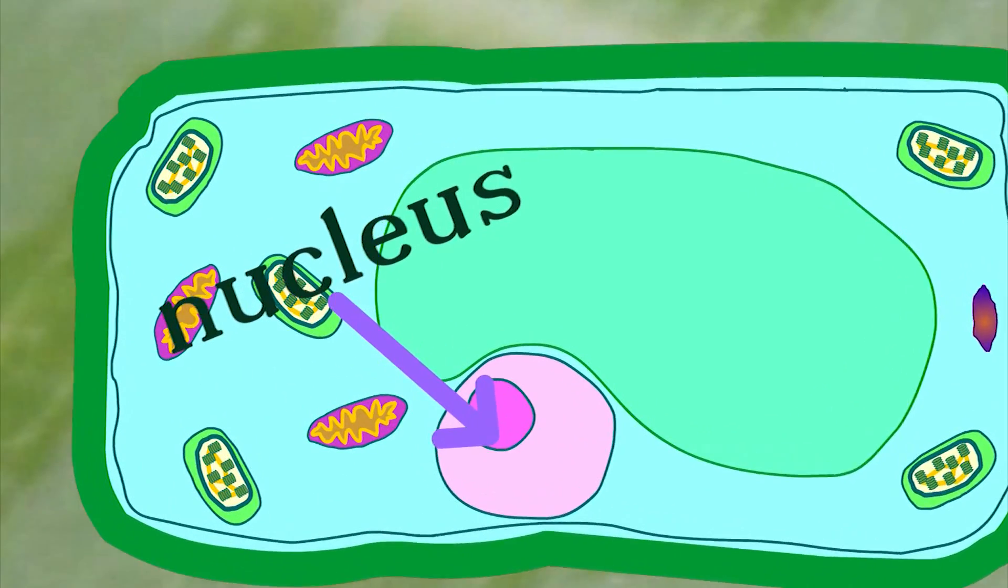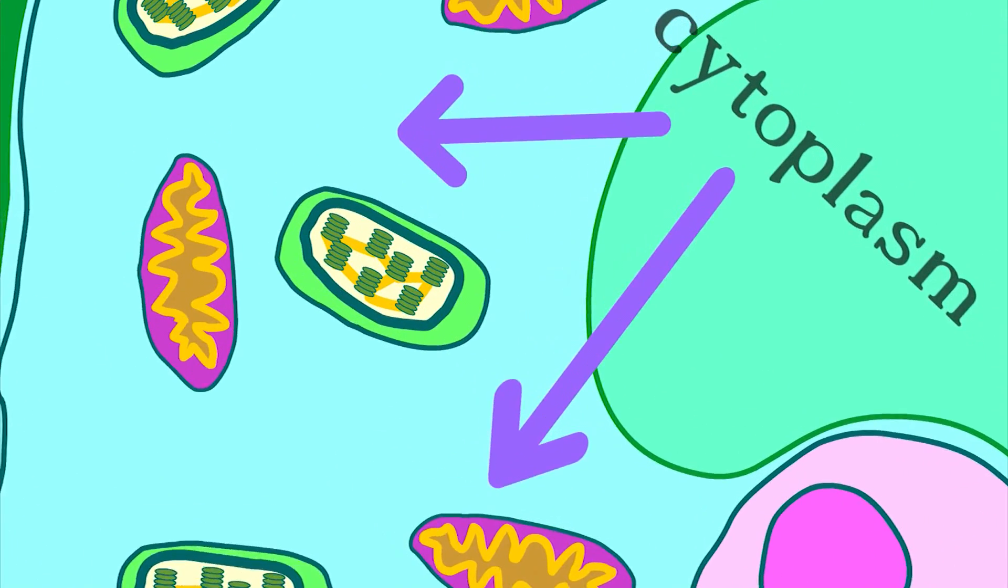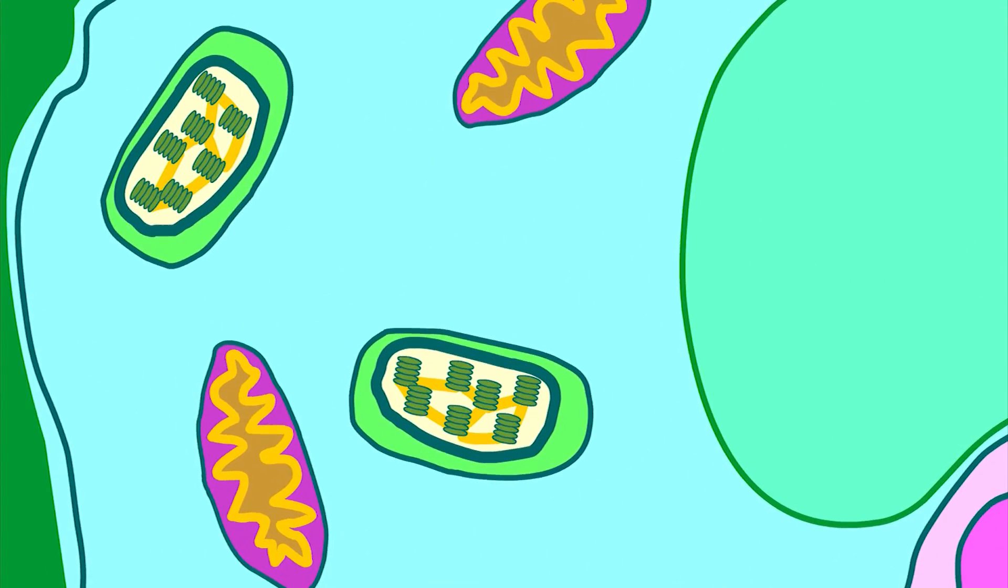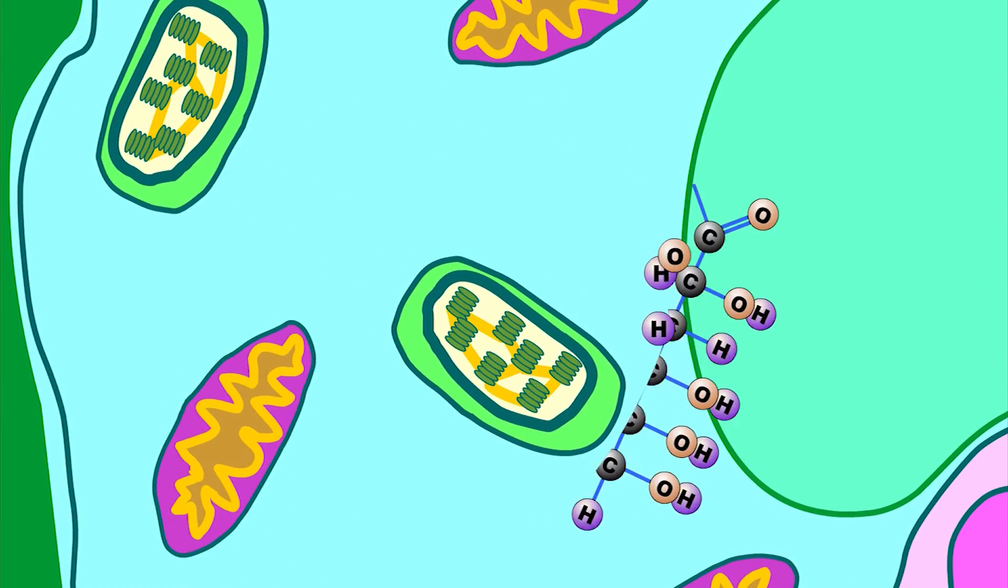The nucleus controls the activity of the cell and contains the DNA, while the cytoplasm is where most of the chemical reactions take place. It's in the cytoplasm that we find the chloroplasts. And this is where photosynthesis occurs.